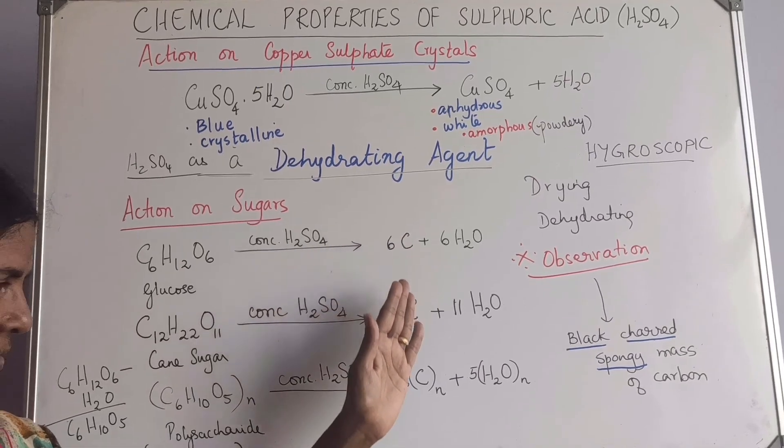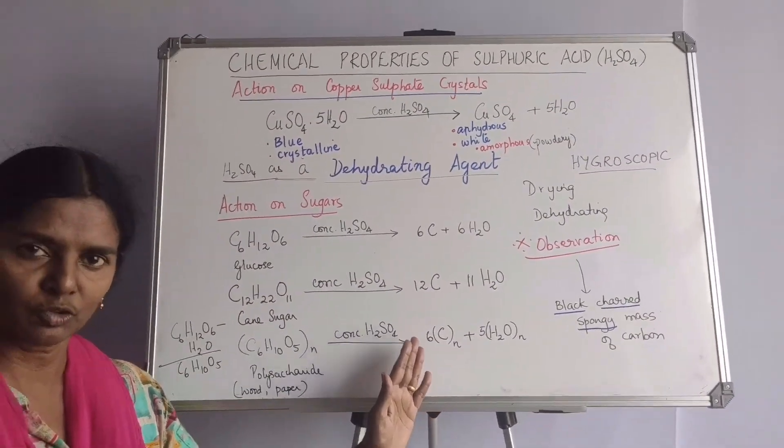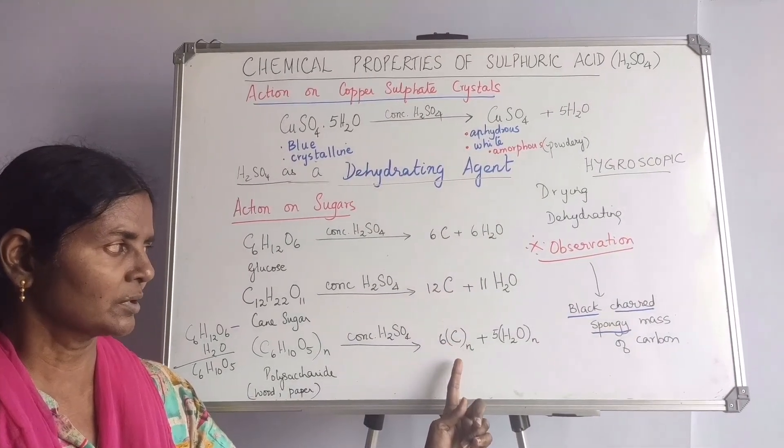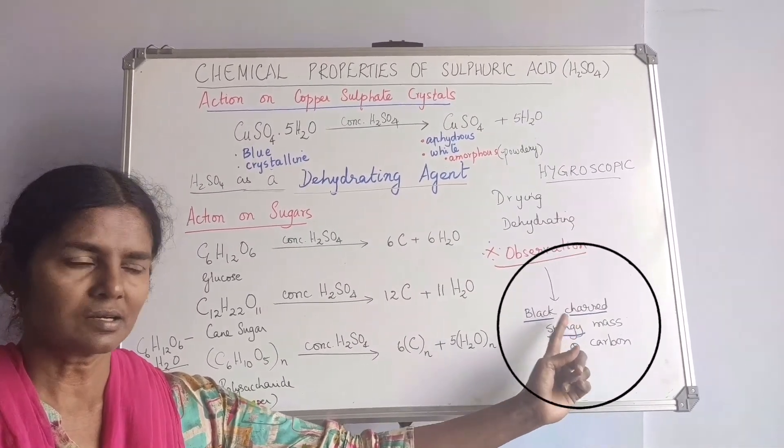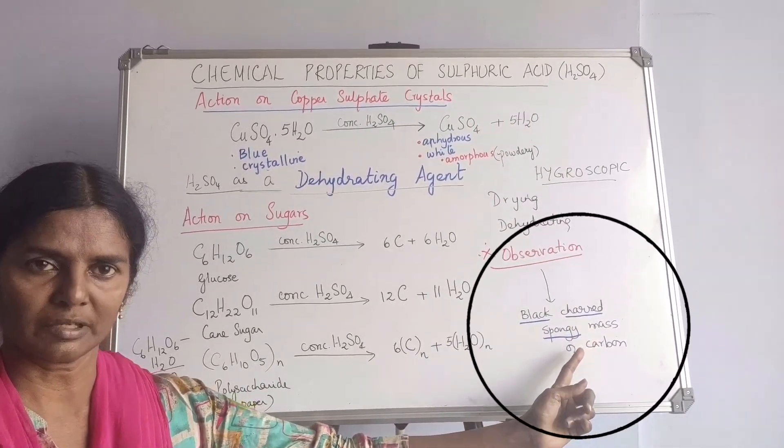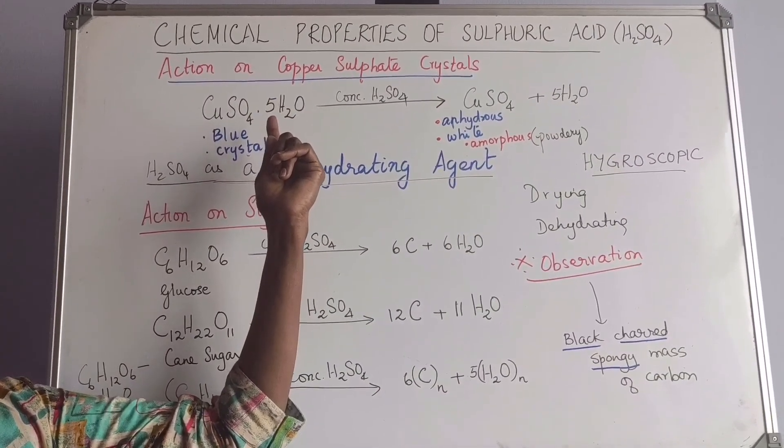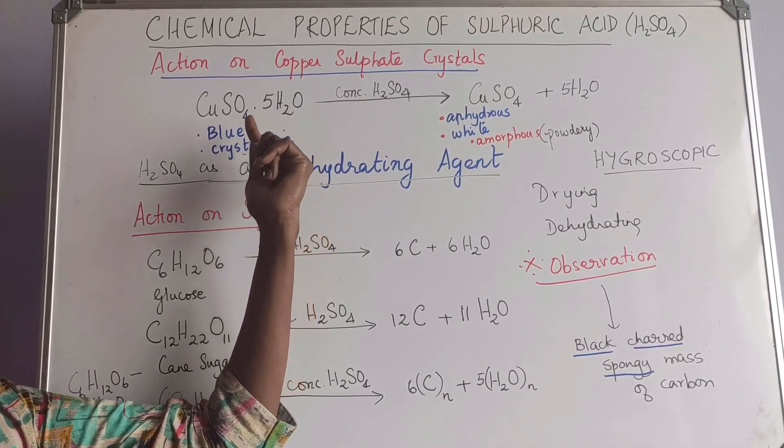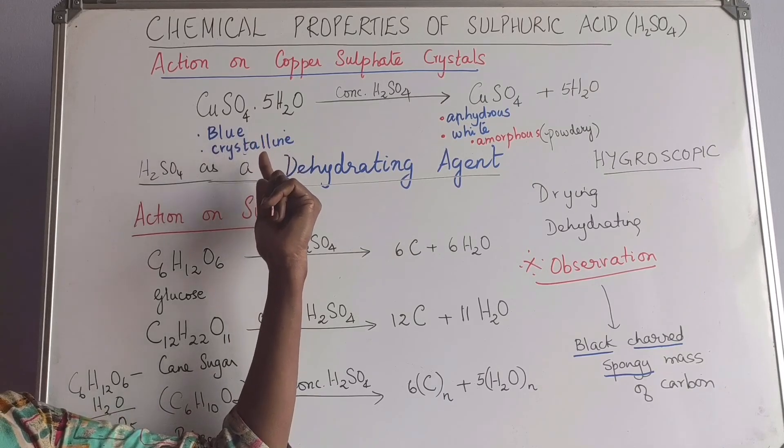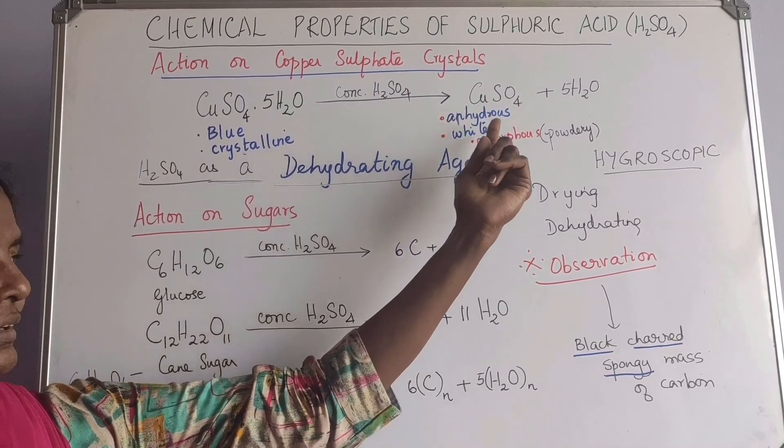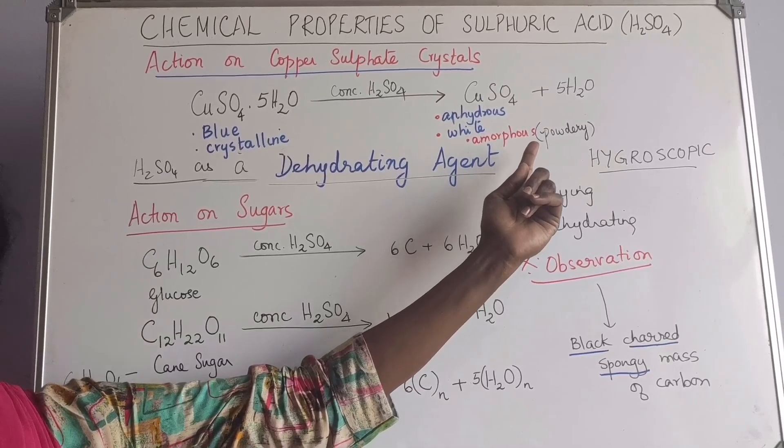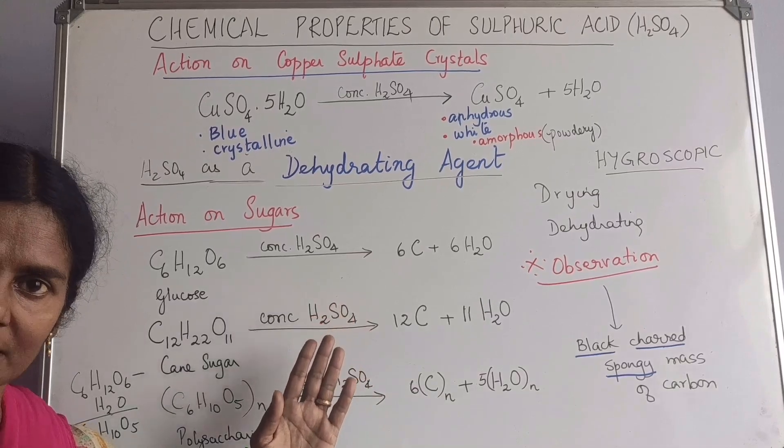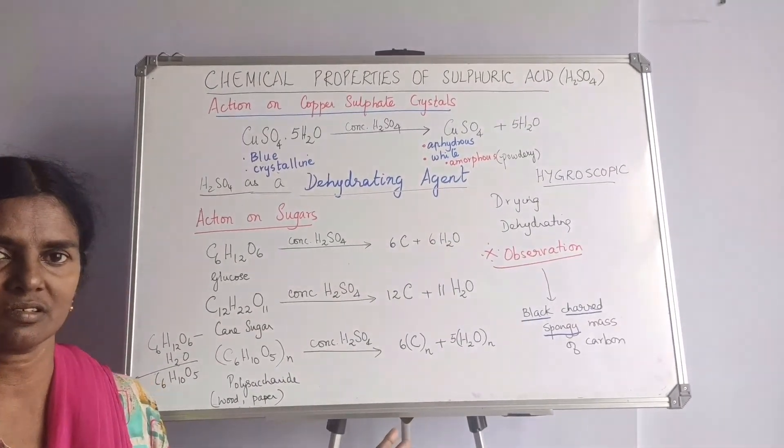And as a recap, when it adds on sugars, it reduces all the forms of sugar, whether it is a monosaccharide, a disaccharide or a polysaccharide into the same carbon, which results in a black, charred, spongy mass of carbon. And when it reacts with copper sulfate, hydrated or pentahydrate, it converts the blue crystalline copper sulfate into anhydrous white amorphous. Amorphous means a powdery one with droplets of water on the sides. So these are the dehydrating properties of sulfuric acid.